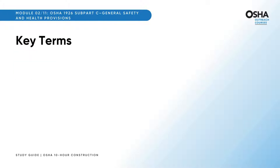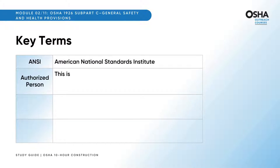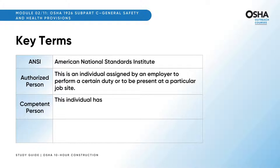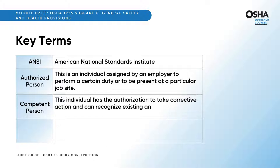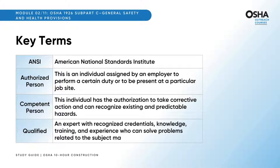Let's memorize the essential key terms. ANSI: American National Standards Institute. Authorized Person: an individual assigned by an employer to perform a certain duty or to be present at a particular job site. Competent Person: this individual has the authorization to take corrective action and can recognize existing and predictable hazards. Qualified: an expert with recognized credentials, knowledge, training, and experience who can solve problems related to the subject matter, work, or project.